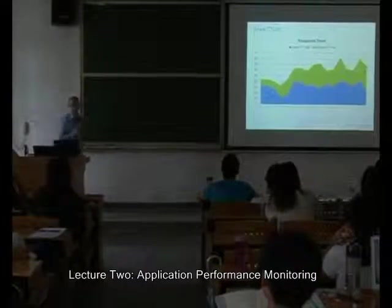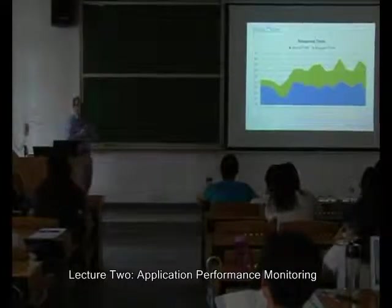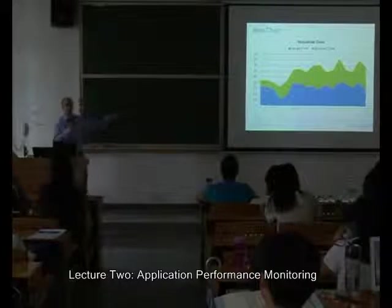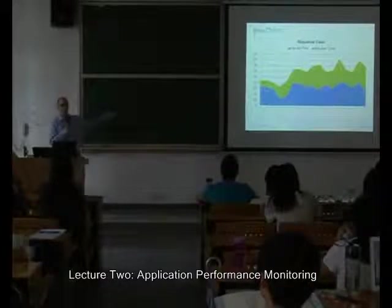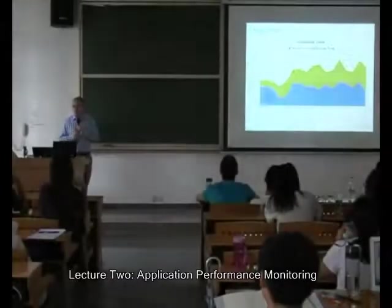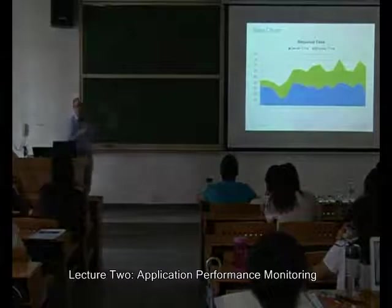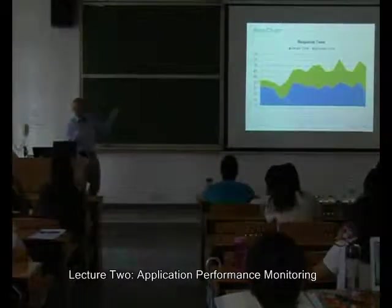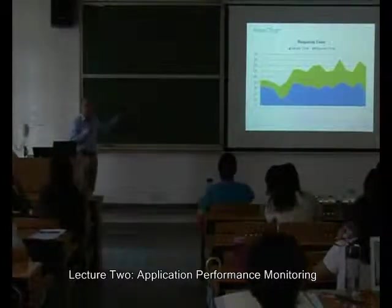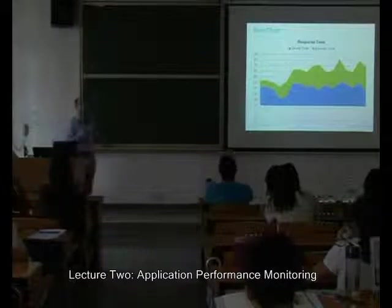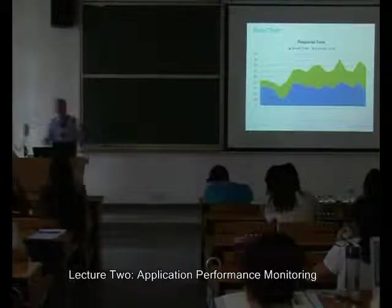Area charts are very popular. Similar rules to a bar chart, just a different way to show it. This example shows response time: blue is server time and green is browser time. Metrics are data over time, so it's all time series.